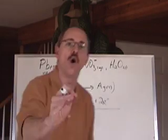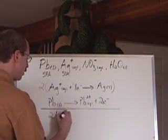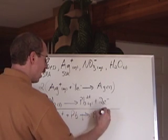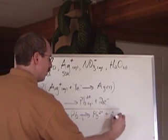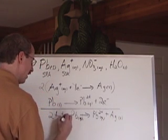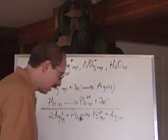You can't have electrons left over in the net equation. They have to cancel. So you get two Ag positive plus lead, and that's going to make lead ions and silver. That's a solid. That's AQ. That's AQ. And that is AQ. And that's a solid. Now, here's the thing.